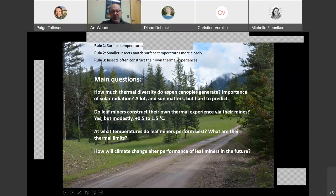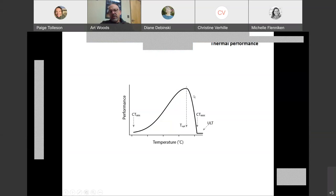At what temperatures do leaf miners perform best and what are their thermal limits? We want to construct the thermal performance curve for leaf miners. That involves assessing the shape of this curve, trying to identify the temperatures at which they perform best and fastest, and then identifying temperature limits. Although we're not going to identify lower limits, we're going to focus on these upper limits, CT max, that's where performance goes to zero, and then the upper lethal temperature, which typically is a little bit warmer the temperature at which activity ceases.